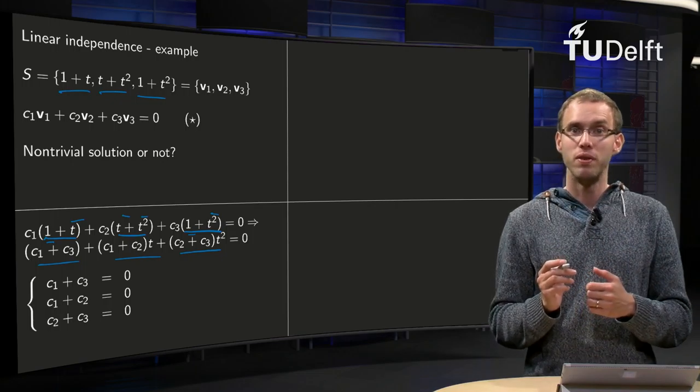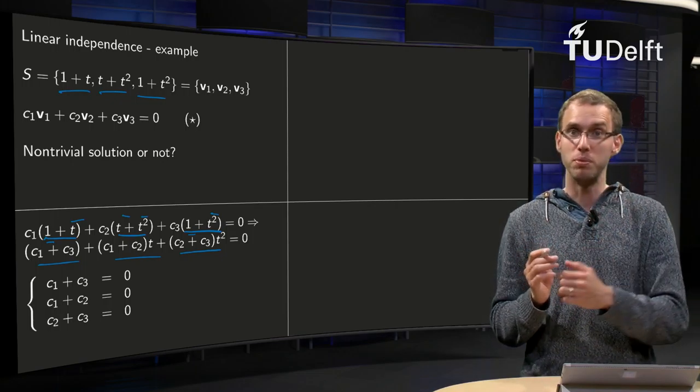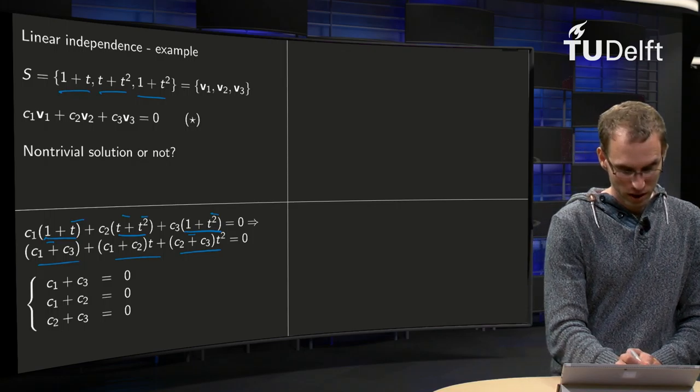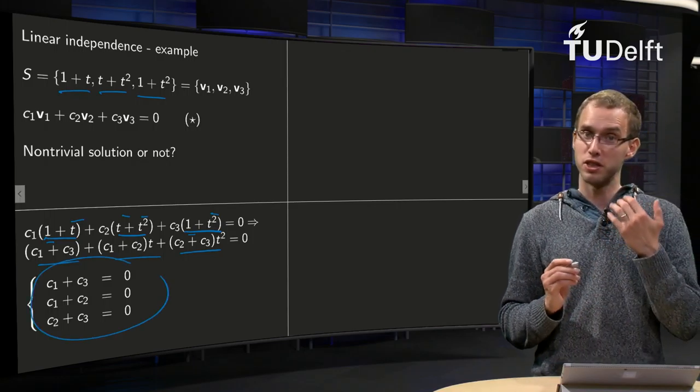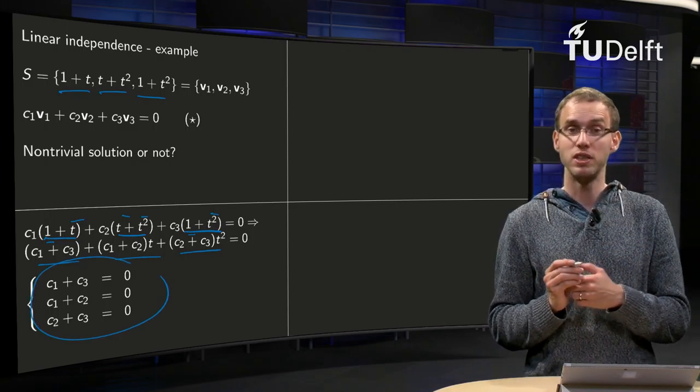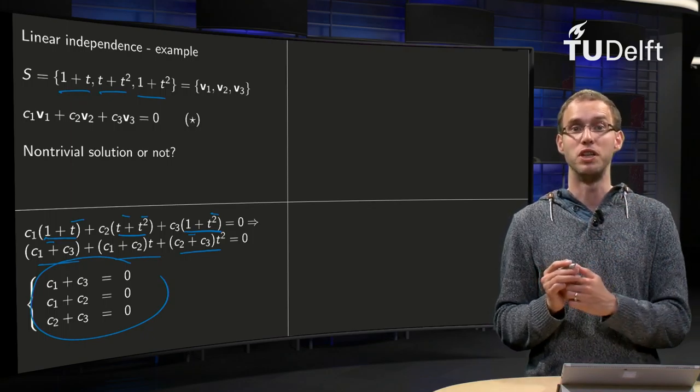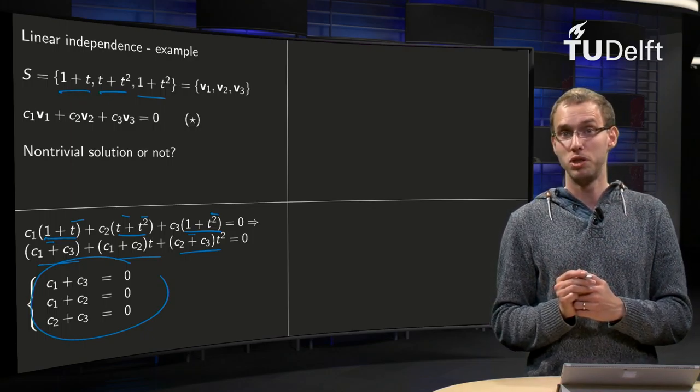So what do we get? We have three coefficients, they all three have to be zero. So in the end we have over here a linear system with three equations and three unknowns, and they all have to be zero, and let's see what the solution of that system is.